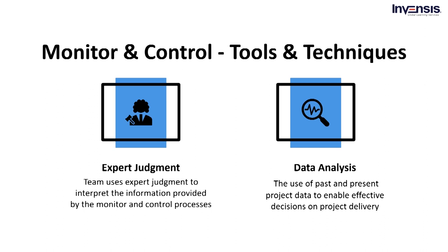Moving on, we have earned value analysis, which provides an integrated view of the scope, schedule, and cost performance. Root cause analysis focuses on identifying the main reason for a problem, allowing you to identify reasons for discrepancy in areas the project manager should focus on. Trend analysis is used to predict future performance based on past results, anticipating expected deviations and warning the project manager that problems may occur later in the schedule. This information is available early in the project timeline, giving the project team time to analyze and correct anomalies, and the results will help recommend preventative measures as needed.